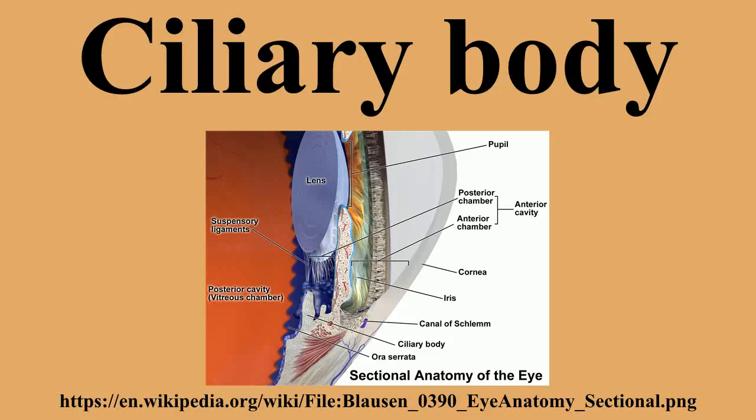The ciliary body is attached to the lens by connective tissue called the zonular fibers. Relaxation of the ciliary muscle puts tension on these fibers and changes the shape of the lens in order to focus light on the retina. The inner layer is transparent and covers the vitreous body, and is continuous from the neural tissue of the retina.